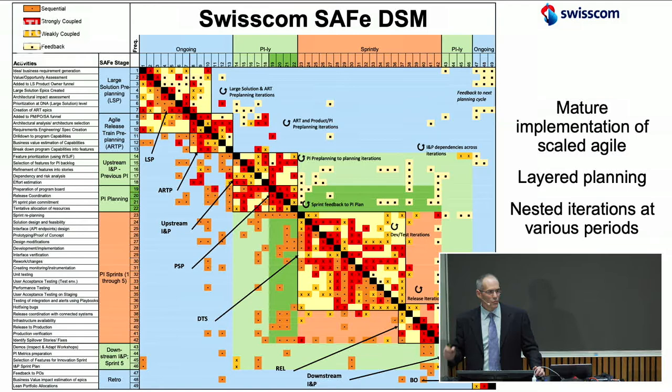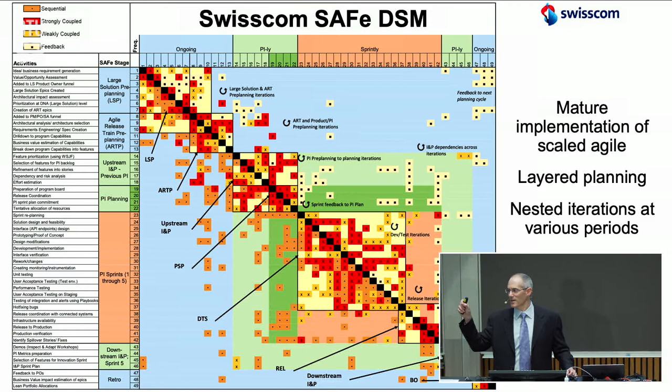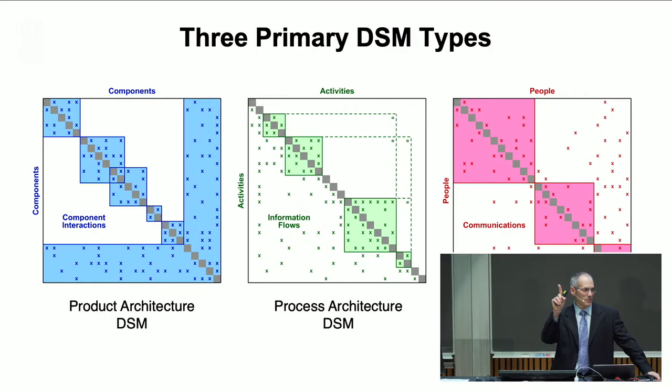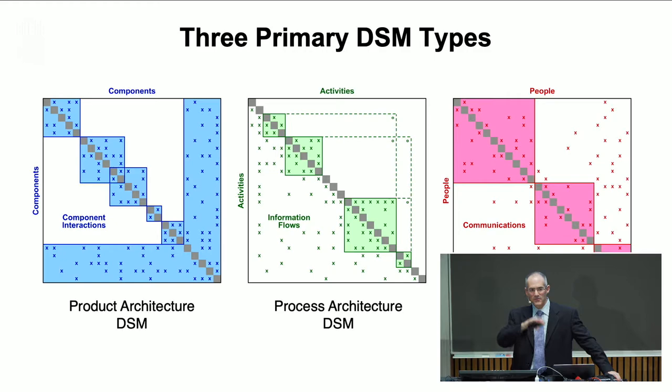This work over the years looking at process models has stood the test of time. We've been able to model this for dozens of organizations — I've shown you two examples in very different industries. That was just one type of model — the process model. To make this a complete lecture, I should show you examples of the other two types.